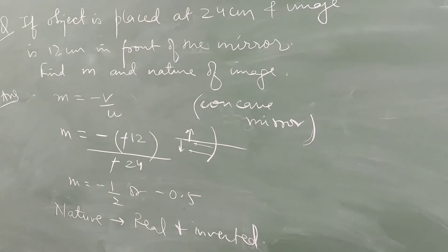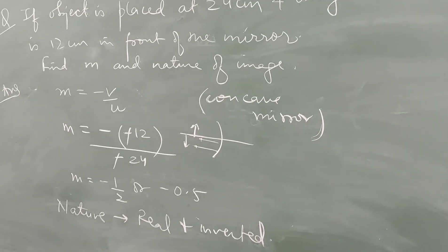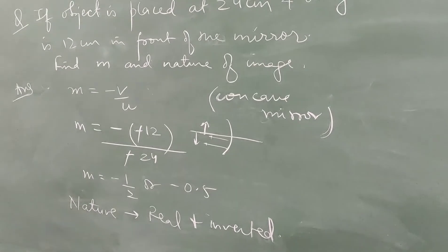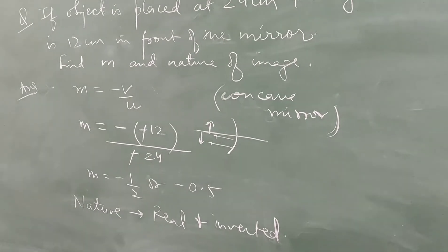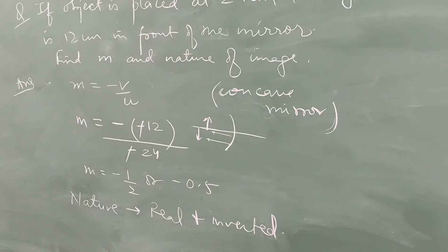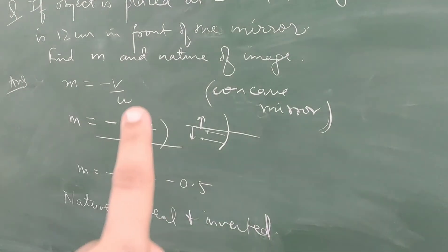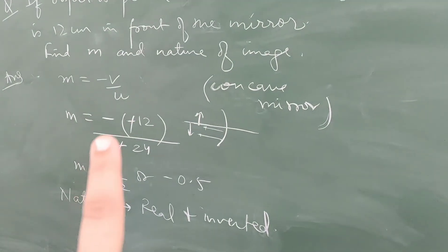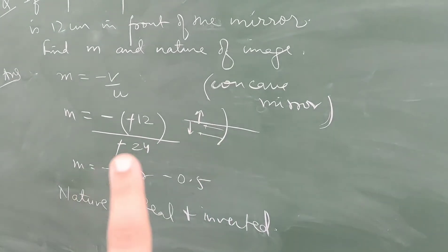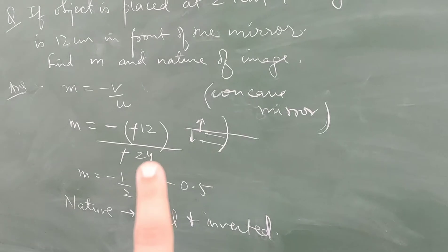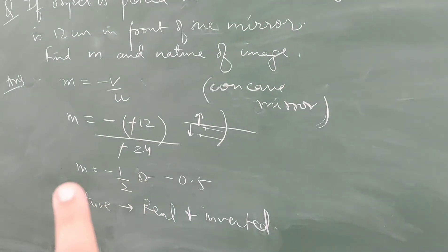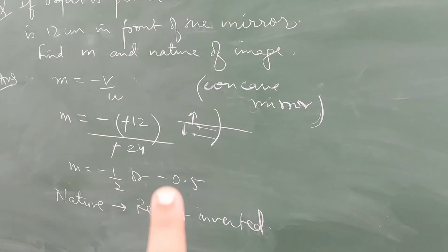Next: object is placed at 24 cm and image is 12 cm in front of the mirror. Find magnification and nature. Since image is in front of the mirror, it is a concave mirror. Magnification = minus v/u = minus(minus 12)/(minus 24). One negative cancels, giving magnification = minus 0.5. So the image is real and inverted.